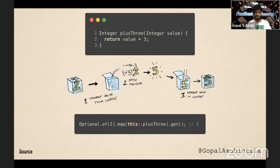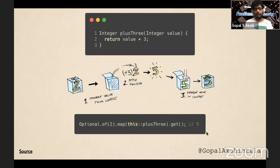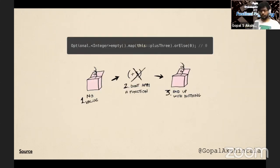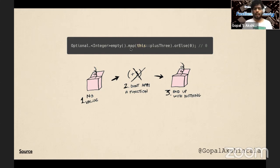Imagine you have a plus-three function. Traditionally you'd pass an integer and get back five. But if the value 2 is inside a monad box, you do it the other way: you pass the function to the monad and let it be applied on the value, then put the result back in the box. With Optional, when you do Optional.of(2), you're putting 2 inside the monad box. When you do .map(plusThree), you apply the function on the 2. When you do .get(), you get the result out of the monad.